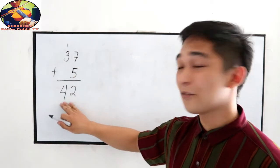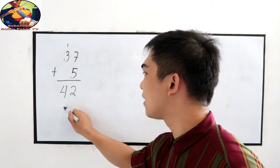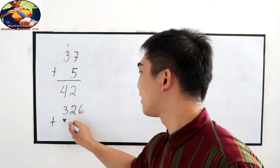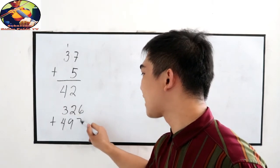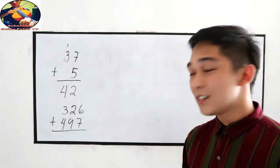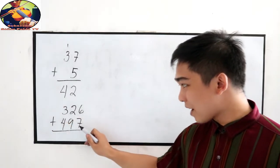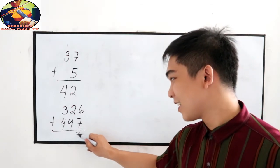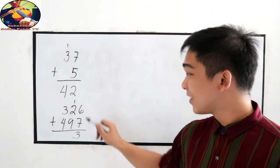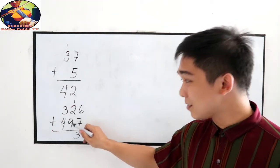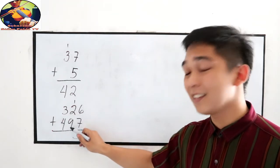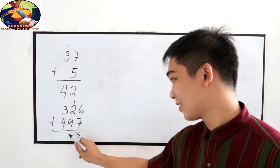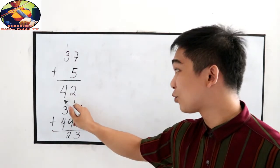Let's say I have 326 plus 497. So 6 plus 7, that is 13. Then carry 1. Add those numbers in our 10's place. 2 plus 9 is 11. Then carry 1, and with the carry 1, that is 12, carry 1.